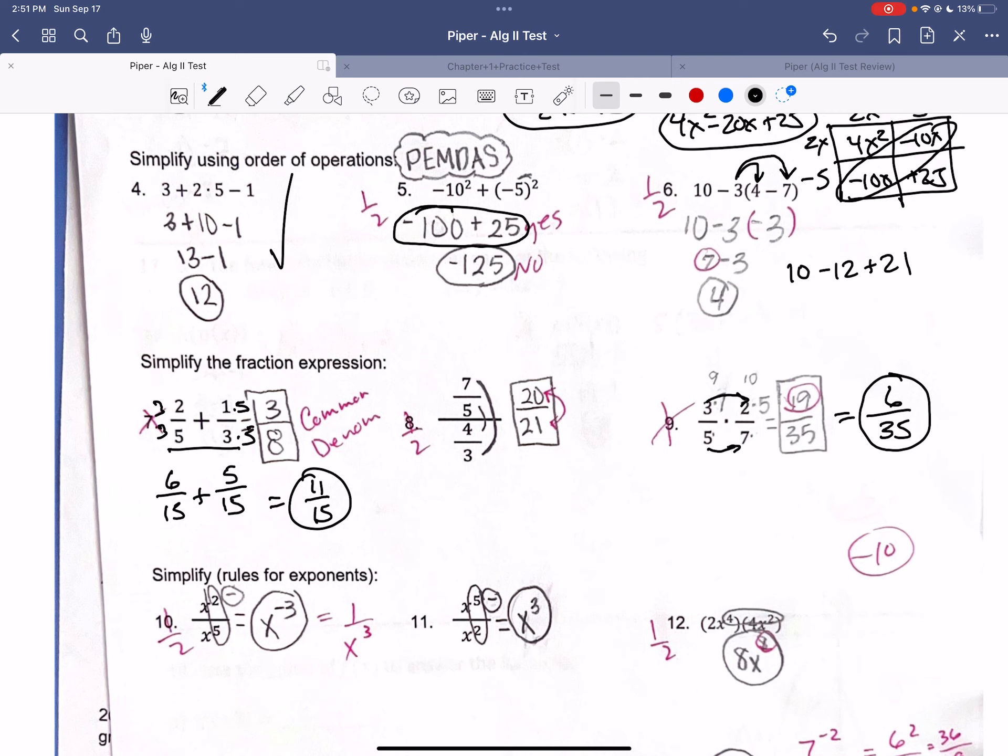Multiplying fractions. You multiply top times top, bottom times bottom. So that would just be 6/35. That's all you have to do for that. When you're dividing fractions, keep, change, flip. So keep the first one, change the sign to negative, and flip the other one over. So that would be times 3/4. So that would be 21/20. That's how you would do that. So you just got that flipped around.